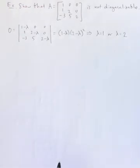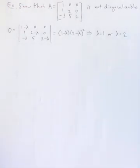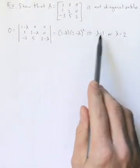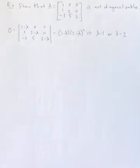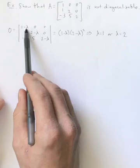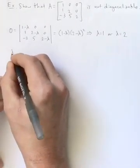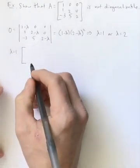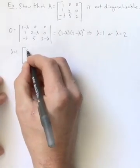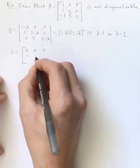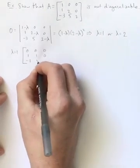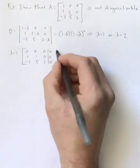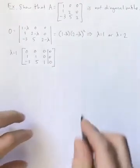I want to find the basis vectors for the eigenspaces for each one of these. So what I'm going to do is start by putting in lambda equals 1 and solving the homogeneous system that would have that as its matrix. So I'll have 0, 0, 0, 1, 1, 0, and negative 3, 5, 1. It's a homogeneous system, so I will augment that with zeros.